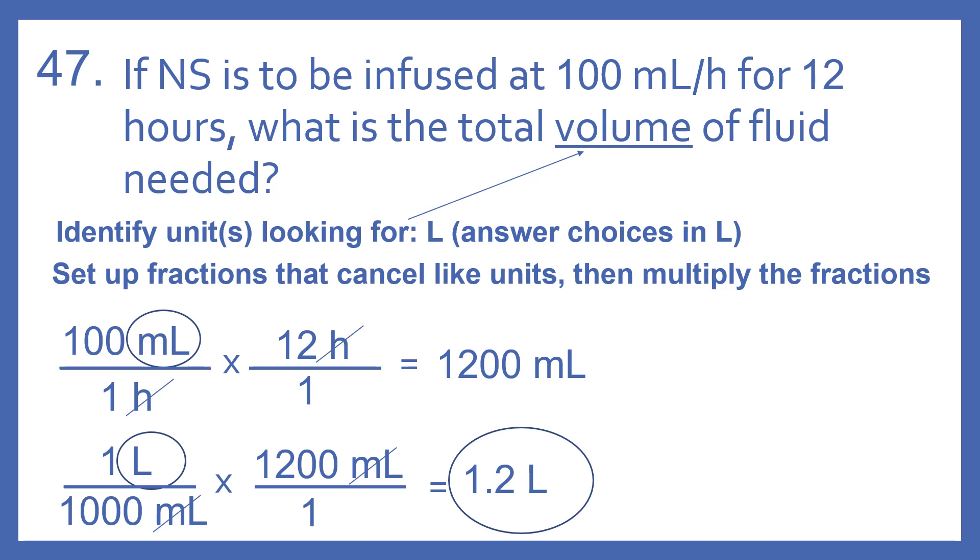So if we have 100 milliliters per hour times 12 hours over 1, we have milliliters on the top, an hour on the top, hour on the bottom, so hours cancel. 100 times 12 is 1,200 milliliters.